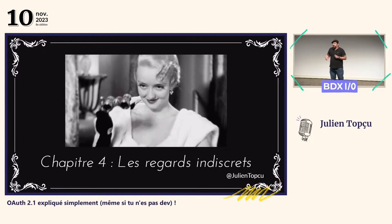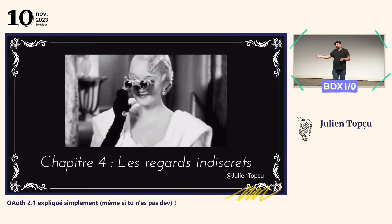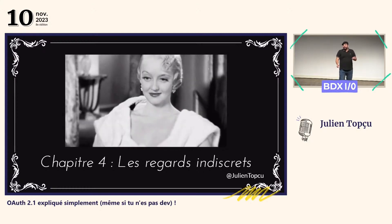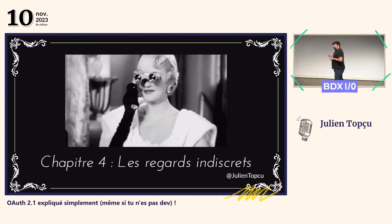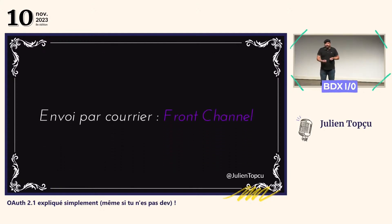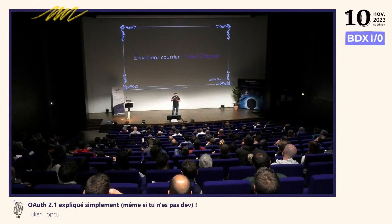C'était presque pire. On avait le convive qui était devant sa boîte aux lettres, qui a ouvert sa lettre. Et au même moment, est passé un voisin qui a jeté un œil par-dessus son épaule, a vu le numéro de réservation, et il s'est juste pointé à l'hôtel. Donc, un envoi de courrier, c'est ce qu'on appelle un front channel. Un channel, c'est un canal de communication dont vous ne pouvez pas être sûr que l'information a atteint le destinataire et qu'elle n'a pas été interceptée. Donc le problème d'un front channel, c'est que vous ne pouvez pas échanger d'accès dessus — c'est trop dangereux, c'est interceptable.